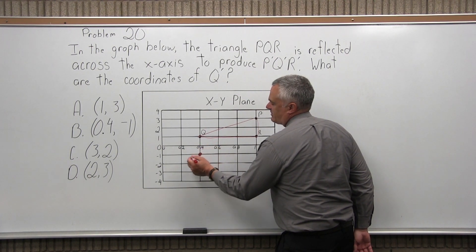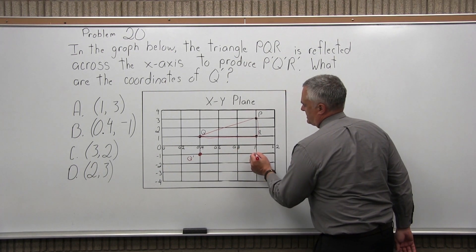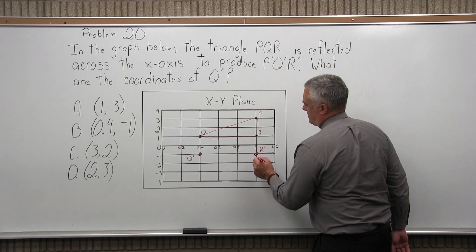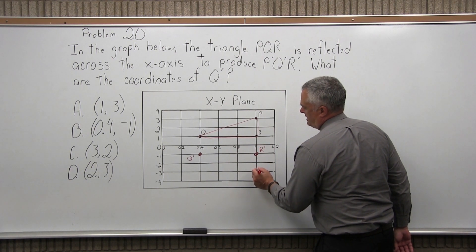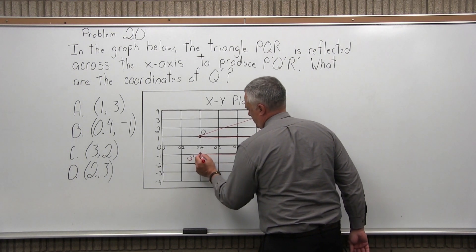Q comes down here and it becomes Q prime, R comes down here and becomes R prime, and then the P becomes P prime. And what you have is a triangle that's a reflection.